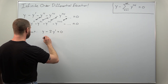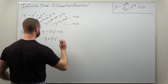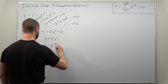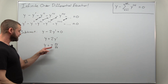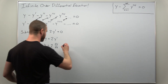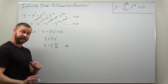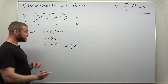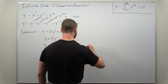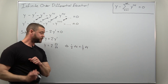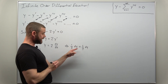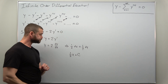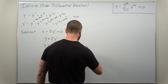We can solve this very easily as a separable equation. Adding the 2y prime to the other side and rewriting y prime as dy/dx, we separate: divide the 2 over, multiply the dx over, and divide the y over. What we get is one half dx equals 1 over y dy. We integrate both sides — with respect to x on the left and with respect to y on the right — getting one half x plus a constant.